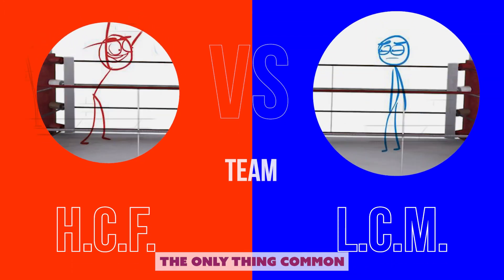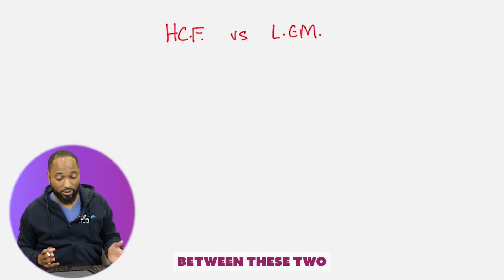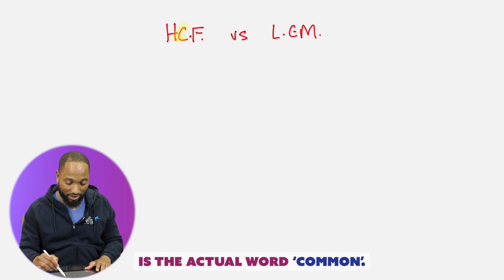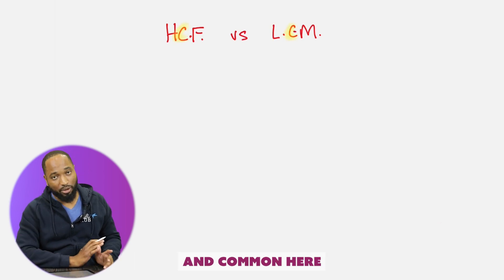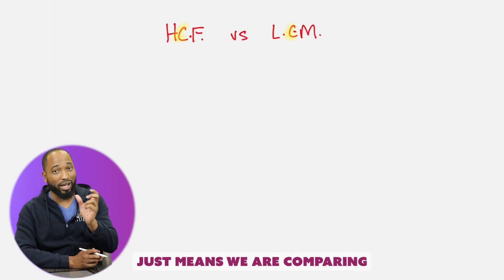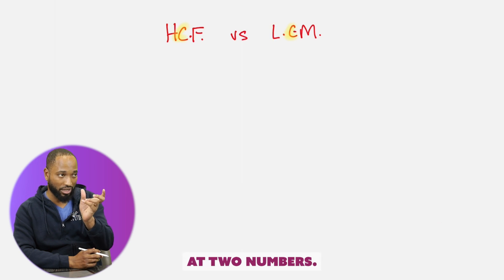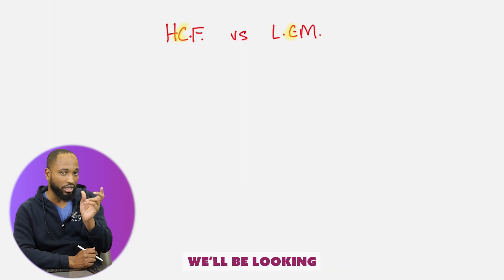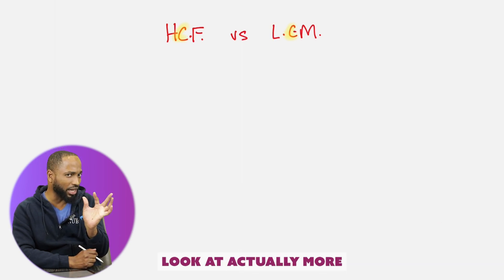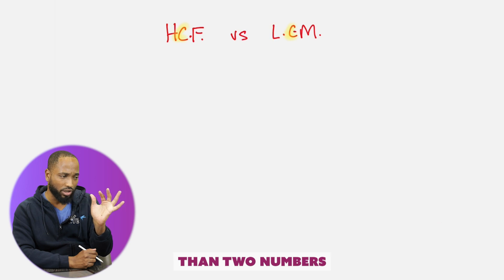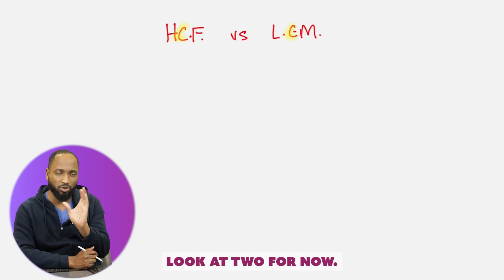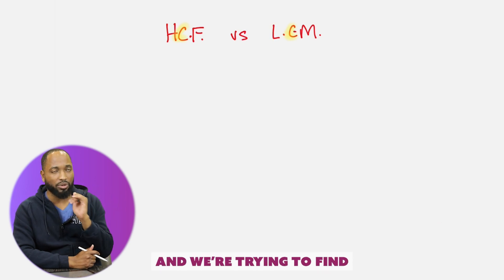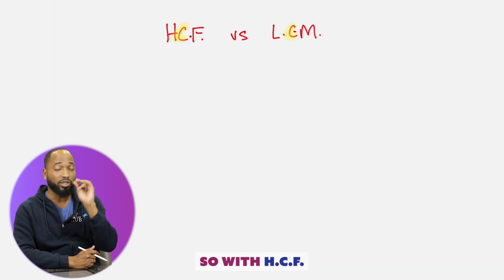The only thing common between these two is the actual word 'common.' And common here just means we are comparing numbers. We're looking at two numbers — for both of them we'll be looking at two numbers. Sometimes you can look at more than two: two, three, four numbers, but let's just look at two for now. We're looking at two numbers and we're trying to find something common about them.